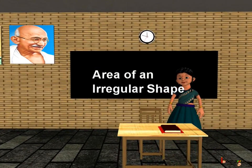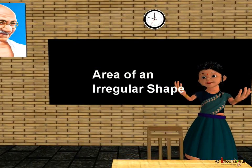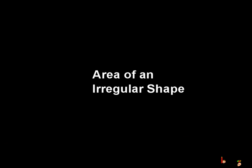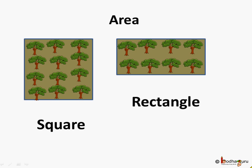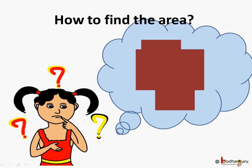Good morning children. Today we shall learn how to find the area of an irregular shape. Now we know how to find the area of a square or a rectangle, but how to find the area of an irregular shape like this? We can't find any single side here, so what to do?